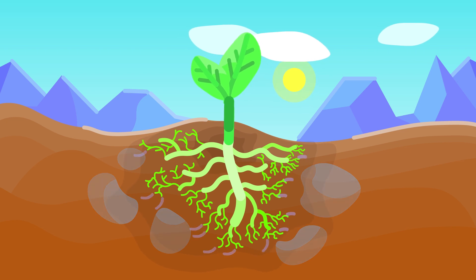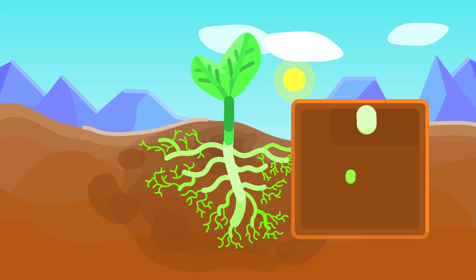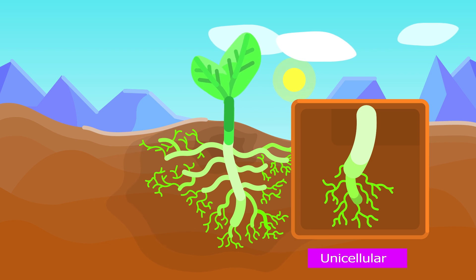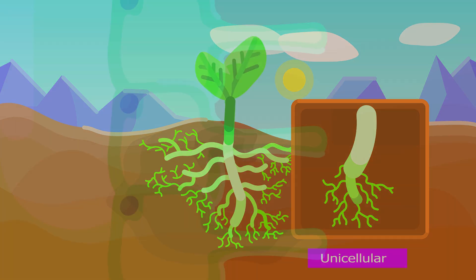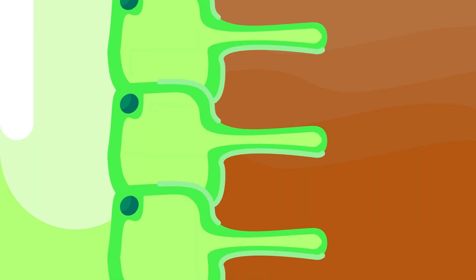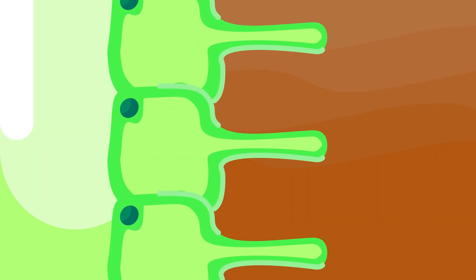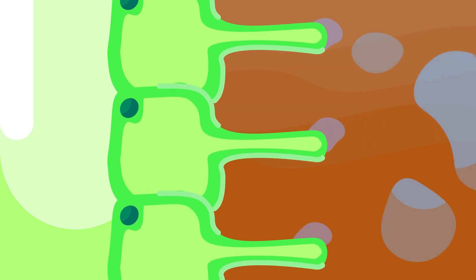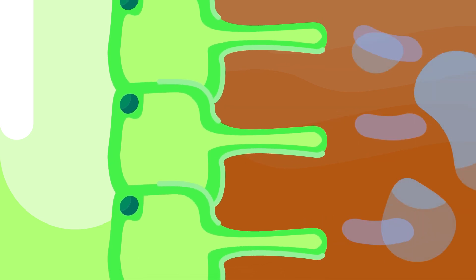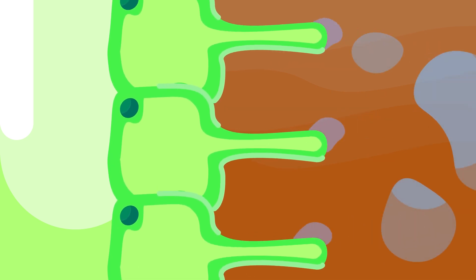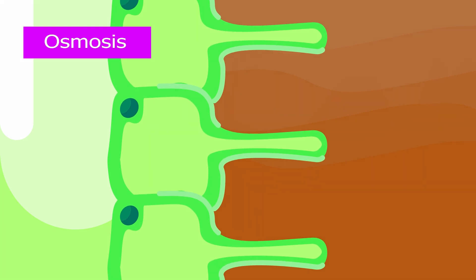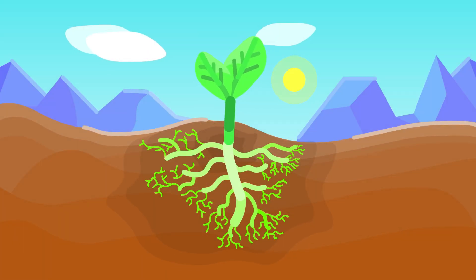Root hairs are unicellular and are produced in thick clusters. The cell membrane of these cells is semi-permeable in nature. Water molecules and mineral salts enter the cell by a process called osmosis.